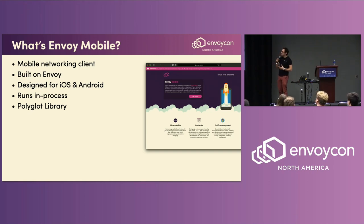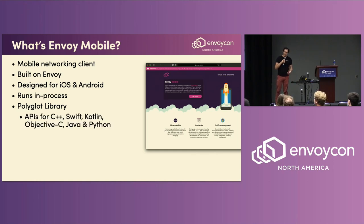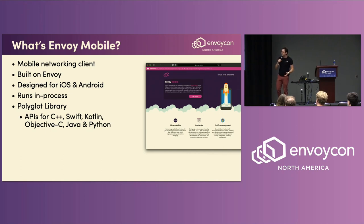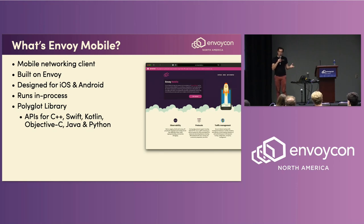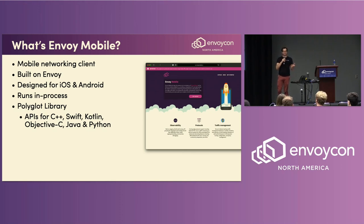We built Envoy Mobile as a polyglot library, meaning there are APIs for various languages and platforms: C++, Swift, Kotlin, Objective-C, Java, and Python. The idea is to make the experience of making network requests as idiomatic and native-feeling as possible. This allows the library to feel right at home for someone writing Kotlin on Android or Swift on iOS, while also offering flexibility for larger teams who want to build a single C++ networking interface and ship it cross-platform.